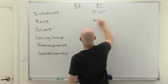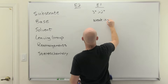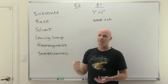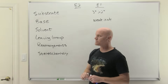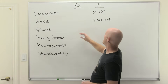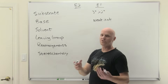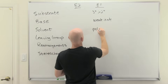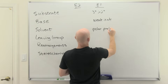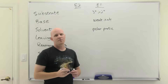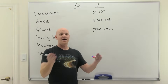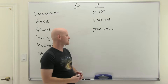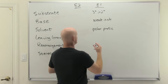For E1, the base is not part of the rate-determining step, so a weak base is okay. Most of your weak bases are going to be water and alcohols, which also qualify as weak nucleophiles for SN1 reactions. For solvent, it's all about stabilizing the carbocation, so you need a polar protic solvent — and just like SN1, E1 is typically done in water and alcohols, which serve as both the base and the solvent.